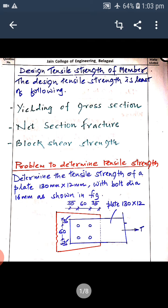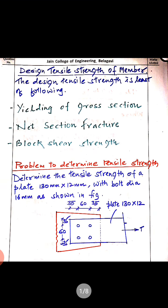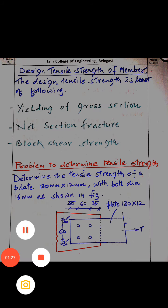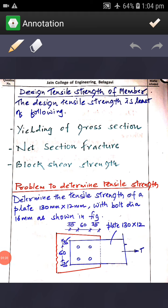The problem asks us to determine the tensile strength of a plate of size 130 mm by 12 mm, with a bolt diameter of 16 mm as shown in the figure. The plate is connected to another plate with four bolts. The bolt spacing is 60 mm and the edge distance is 35 mm. With this arrangement, we have to find the tensile strength the plate can develop.